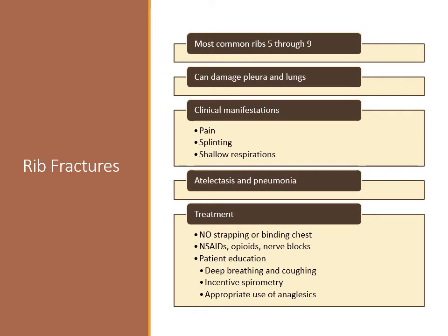Rib fractures are the most common type of chest injury resulting from blunt trauma. Ribs 5 through 9 are the most commonly fractured because they are the least protected by the chest muscle. If the fractured rib is splintered or displaced, it may damage the pleura and the lungs. Clinical manifestations include pain at the site of injury, especially during inspiration and coughing. The patient splints the affected area and takes shallow breaths to decrease pain. Atelectasis and pneumonia may develop because of decreased ventilation and retained secretions. The goal of treatment is to decrease pain so the patient can breathe adequately and clear secretions. Strapping the chest with tape or using a thoracic binder is not recommended as it limits chest expansion. NSAIDs, opioids, and thoracic nerve blocks can be used to reduce pain and aid with deep breathing and coughing. Patient teaching should emphasize deep breathing, coughing, incentive spirometry, and appropriate use of pain medications.